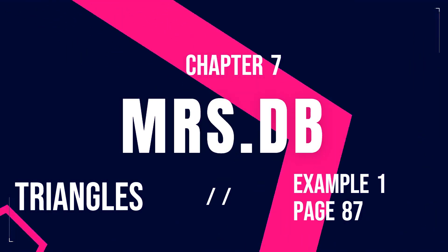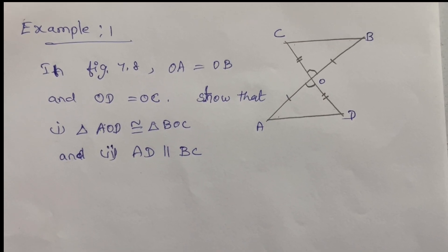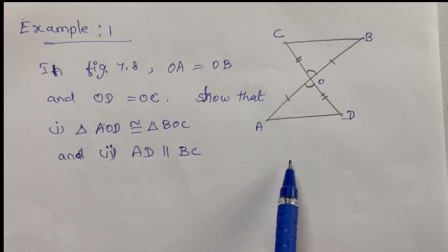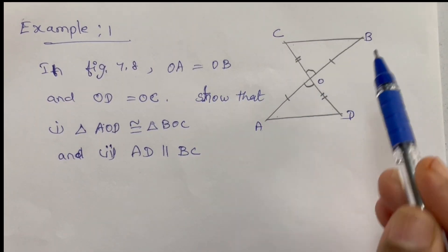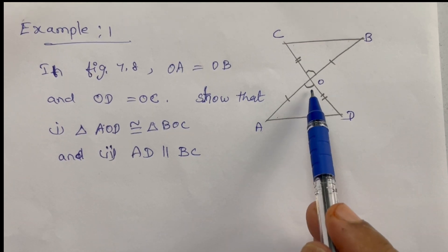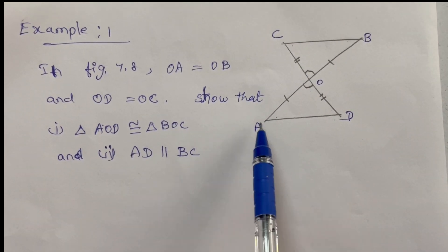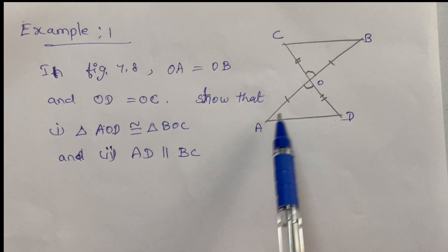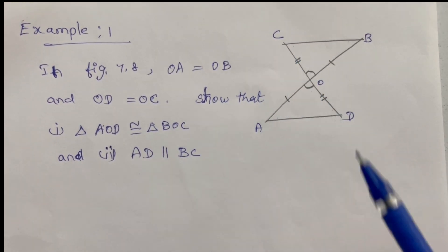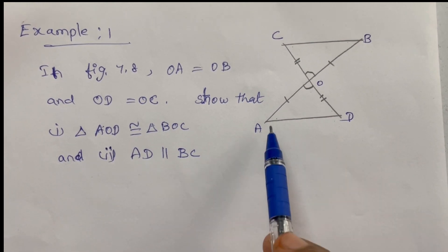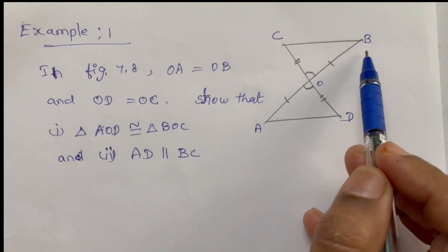Thank you for sending your doubts. Example 1: In figure 7.8, OA equals OB and OD equals OC. Show that triangle AOD is congruent to triangle BOC, and AD is parallel to BC.